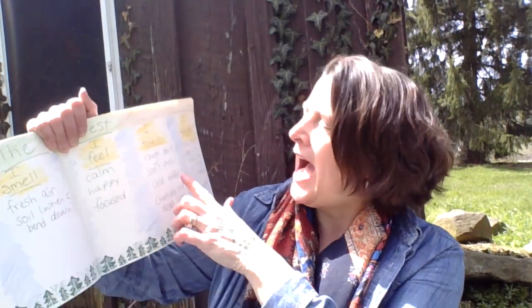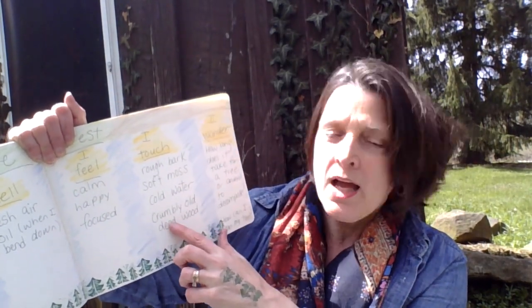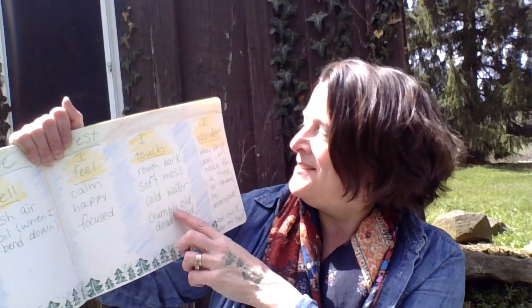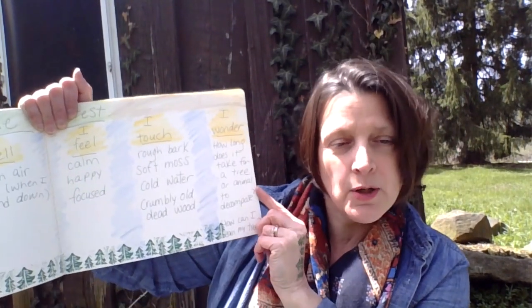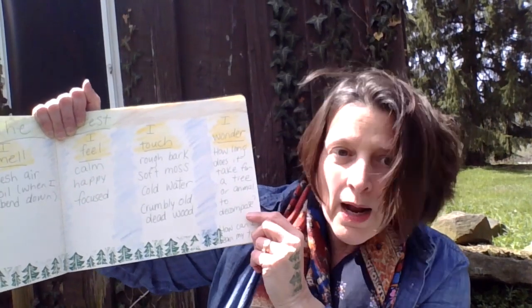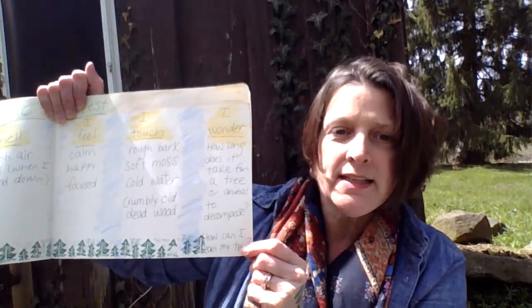I feel: calm, happy, and focused. I touch: rough bark, soft moss, cold water, crumbly old dead wood. And I wonder: how long does it take for a tree or an animal to decompose or rot away into soil? And how can I learn my trees? I saw so much bark, and I wanted to know — how does a person learn trees just from their bark? Just like, how does a person learn a bird from its song? These questions came to me as I wrote in my journal.